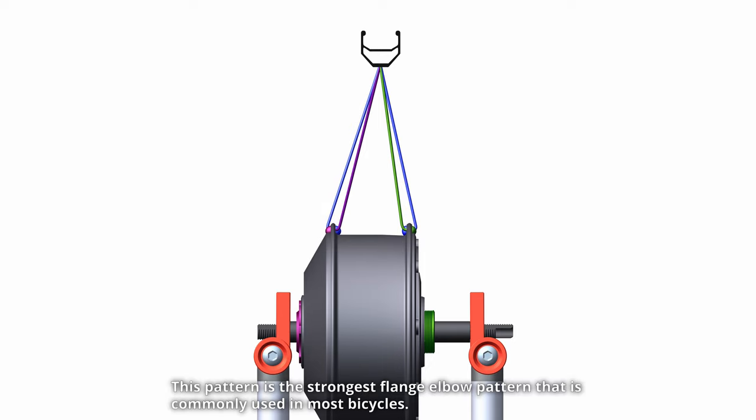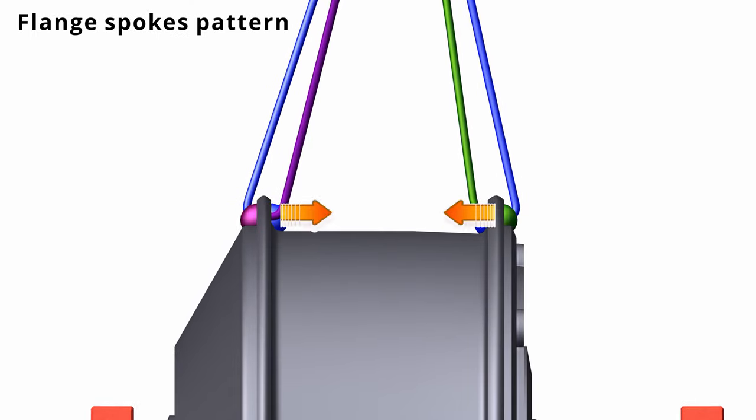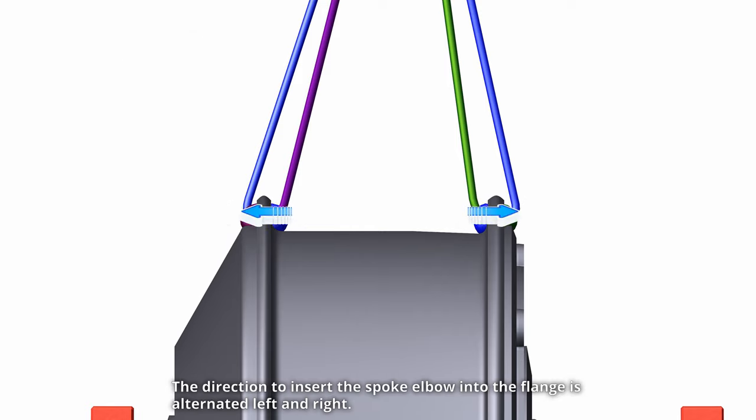This pattern is the strongest flange elbow pattern that is commonly used in most bicycles. The direction to insert the spoke elbow into the flange is alternated left and right.